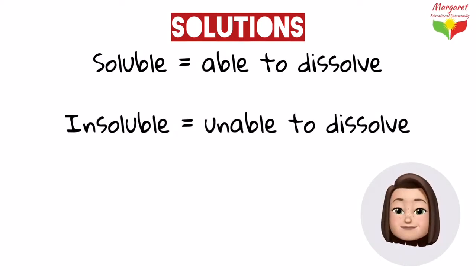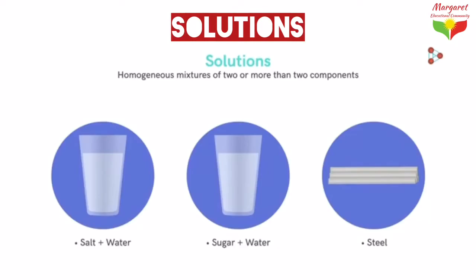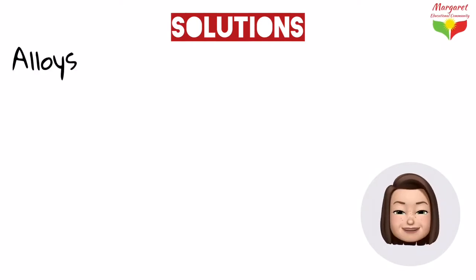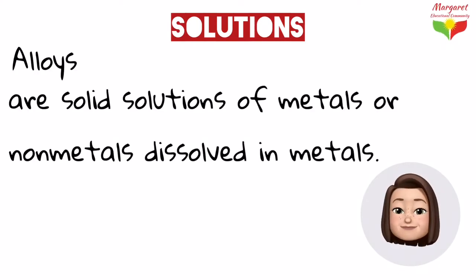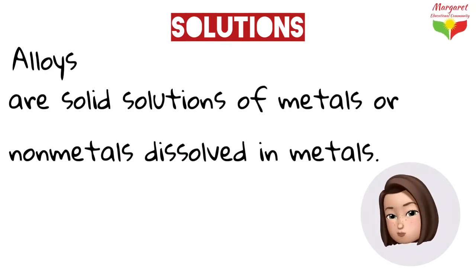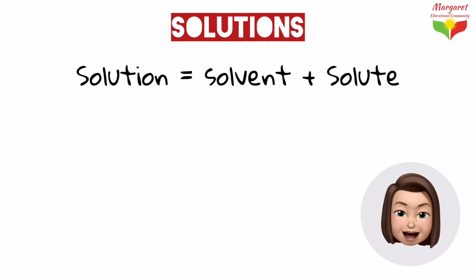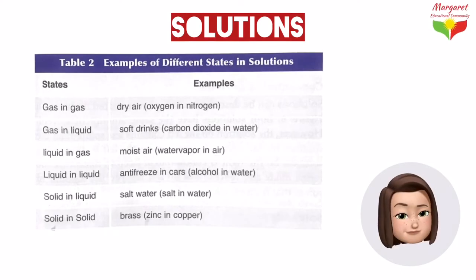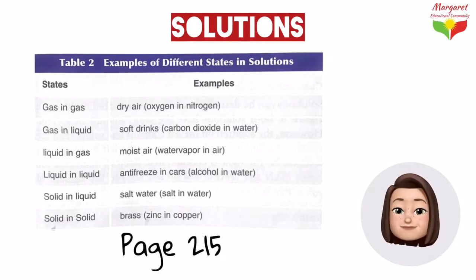Solutions can be liquid, gas, or solid. We also have another type of mixture called alloys — alloys are solid solutions in which metals or non-metals are dissolved in other metals. A solution is made from solvent plus solute. Table 2 on page 215 shows examples of solutions.